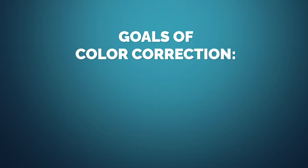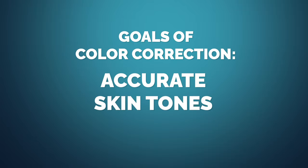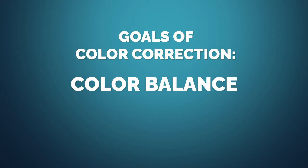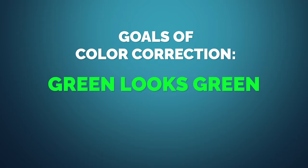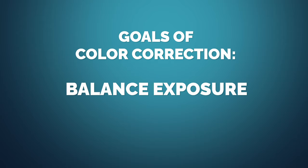The main goals of color correction are: we want to make sure that your skin tones are accurate, we want the colors to appear as they are meant to be — meaning red appears as red, blue as blue, and green as green — and finally, we want to make sure that everything is properly exposed so that nothing is either blown out or underexposed.